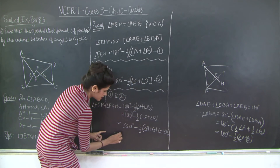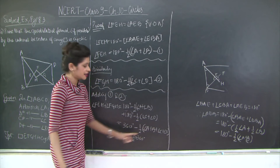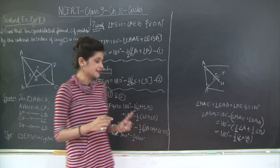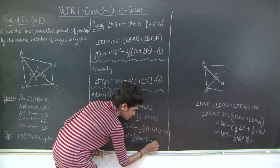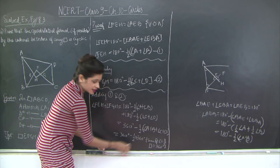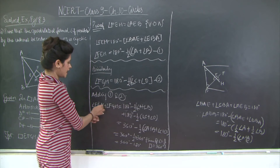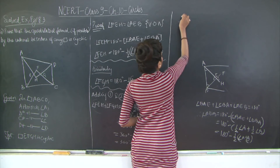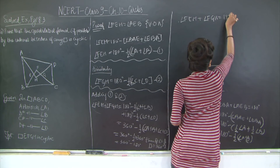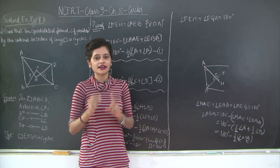This is 360 degrees minus half of 360 degrees. We write 360 degrees for the sum of angles A, B, C, D because ABCD is a quadrilateral and the sum of interior angles of a quadrilateral is 360 degrees. Half of 360 is 180, therefore angle FEH plus angle FGH equals 180 degrees. Since these are a pair of opposite angles of quadrilateral EFGH, quadrilateral EFGH is a cyclic quadrilateral.